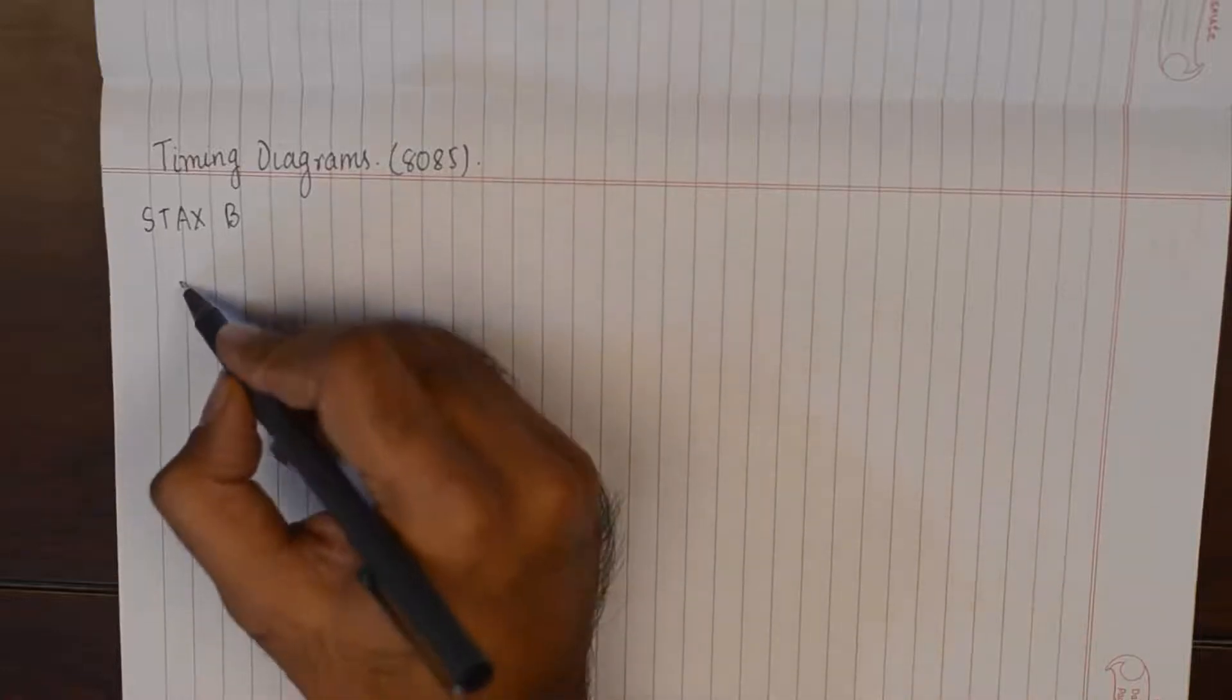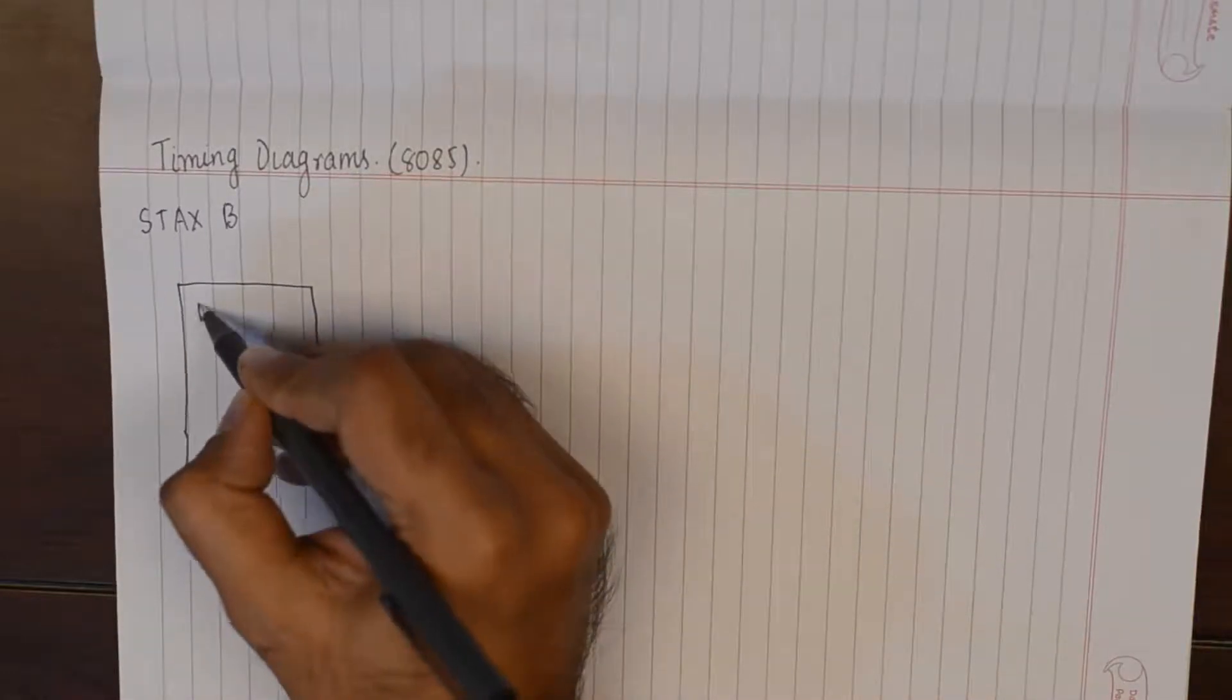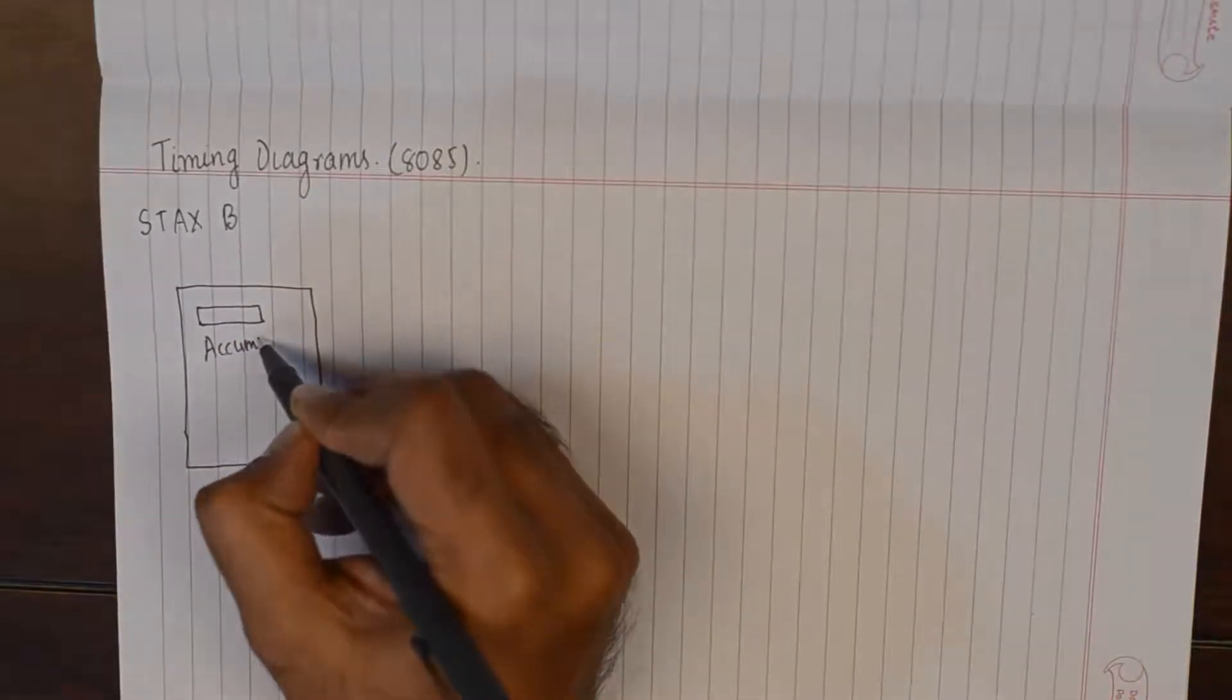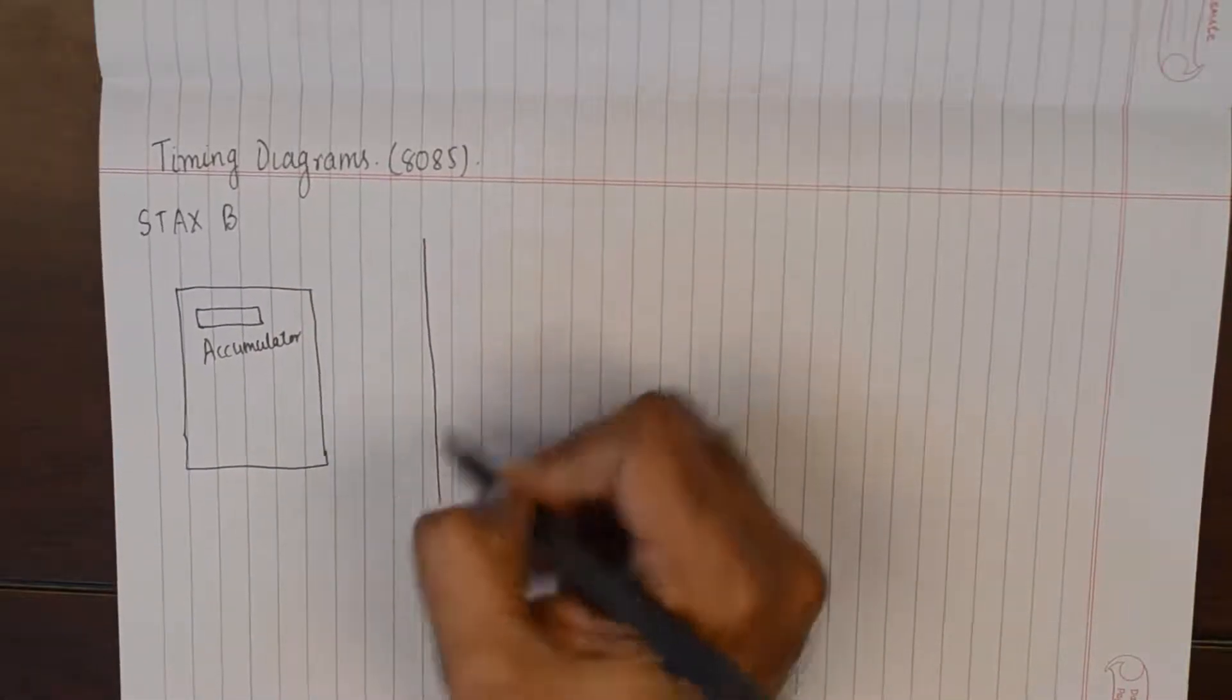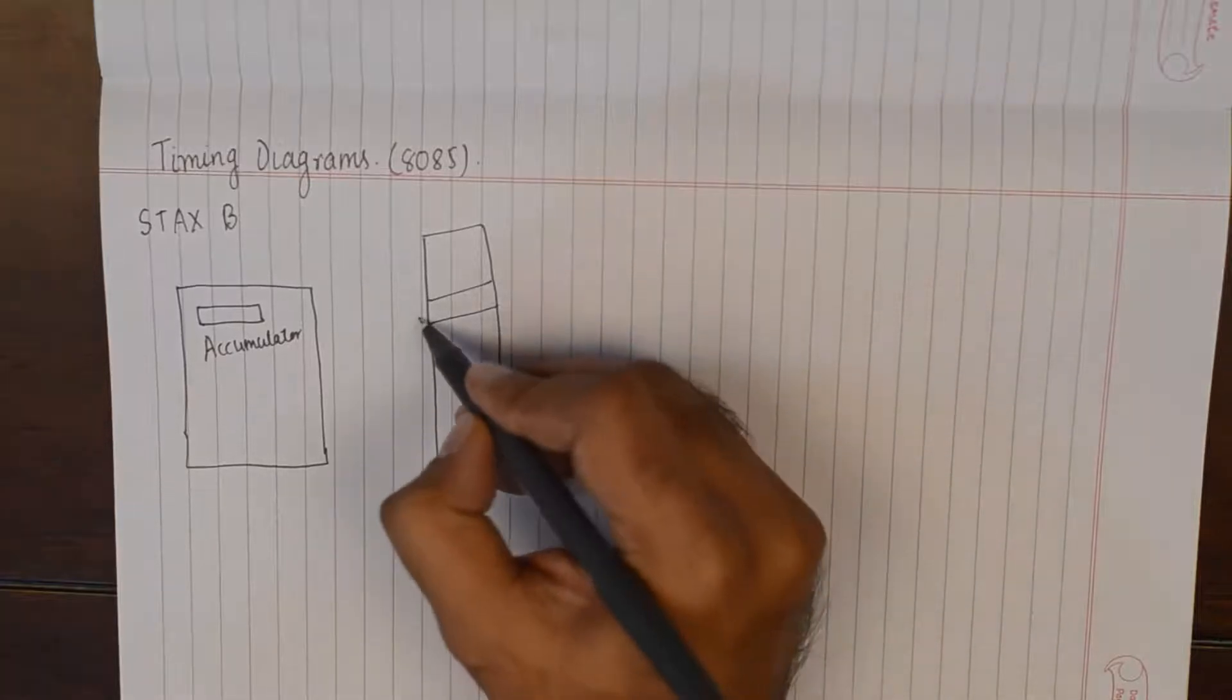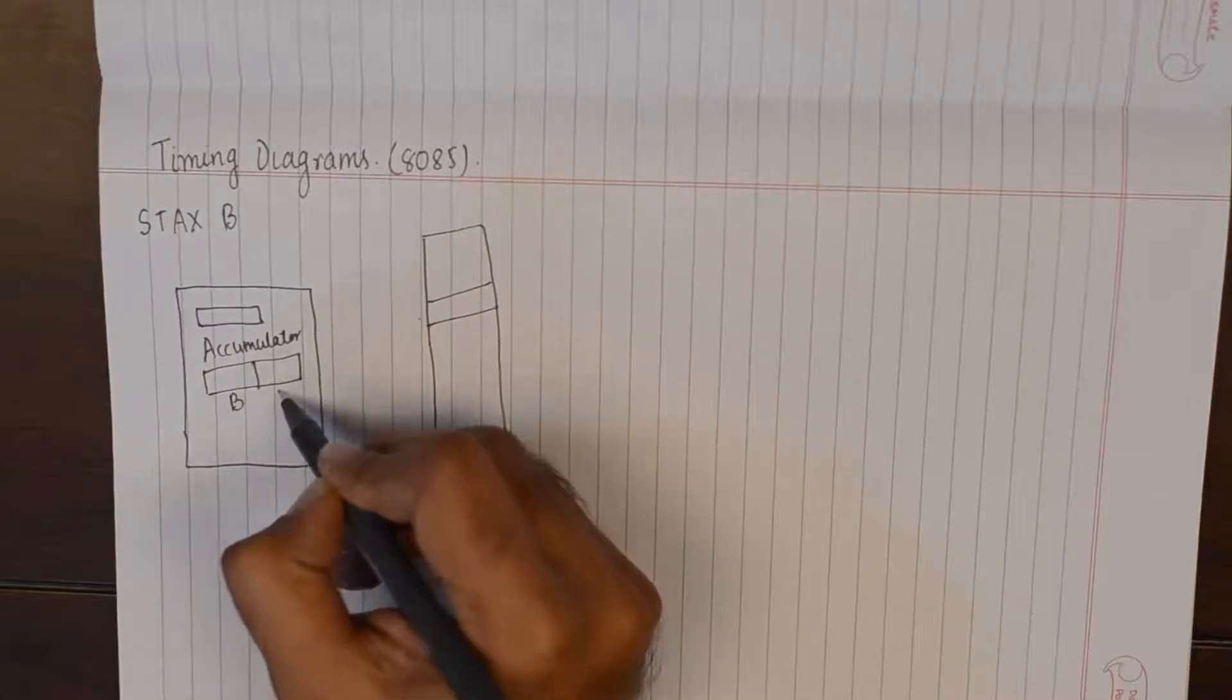Now what happens in this instruction is that this instruction is going to copy the contents of the accumulator to an external memory location whose address is specified by the register pair BC.